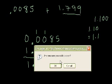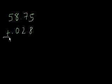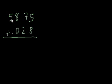Let's do another problem: 58.75 plus 0.028. Now if you saw a problem like this written in this format, your temptation might be to immediately start adding — add the 5 to the 8, the 7 to the 2, the 8 to the 0, then just bring down the 5 — and you would be wrong.